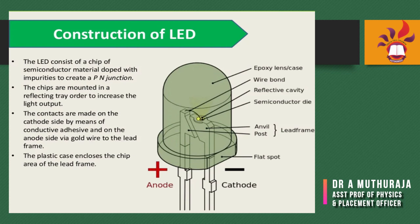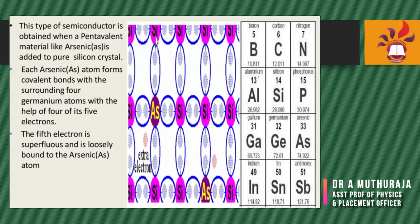The contacts are made on the cathode side by means of conductive adhesive and on the anode side via gold wire to the lead frame. The plastic case includes the chips, the lead frame, and semiconductor materials.